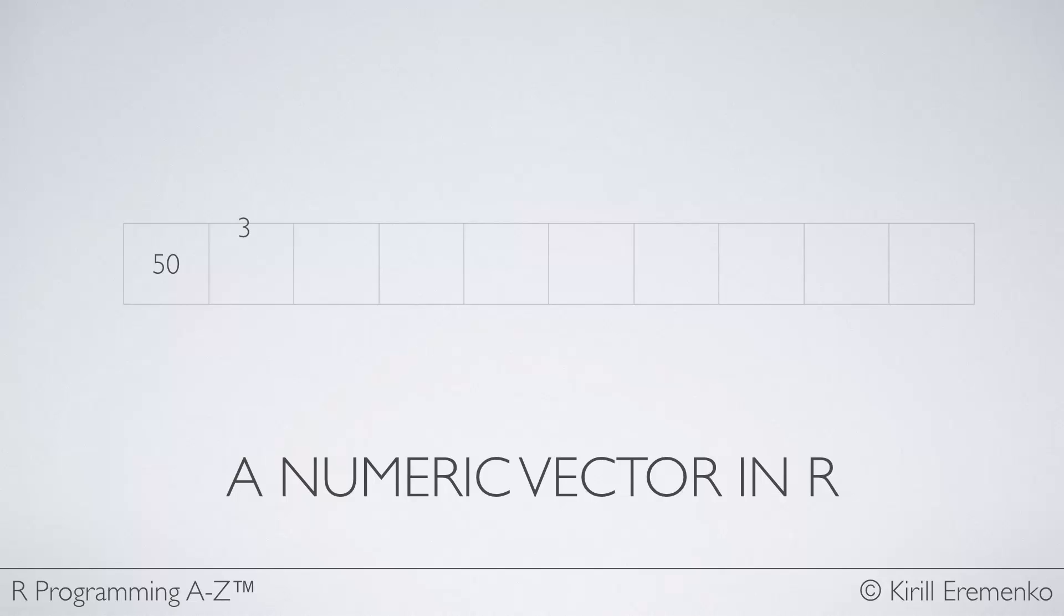So let's say in the first section we put 50, second section 34, 111 and so on. So basically we're putting numbers into this vector and there's 10 numbers and this is a numeric vector.